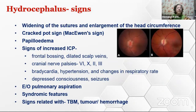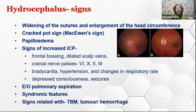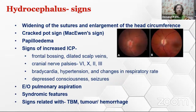Additional signs include widening of sutures, enlargement of head circumference, cracked-pot sign, and papilledema—which may revert to normal after ICP is corrected. Evidence of increased ICP includes frontal bossing, dilated scalp veins, cranial nerve palsies, bradycardia, hypertension, and depressed consciousness. Evidence of pulmonary aspiration may also be present. There can be associated syndromic features and signs related to the basic pathology, such as tuberculosis meningitis signs or evidence of tumor or hemorrhage.